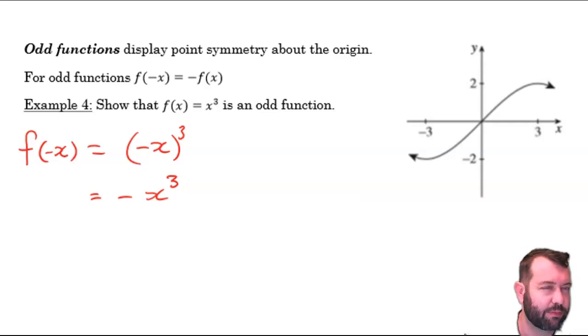Check that out. If I cube a negative, I get a negative. And we can see that that is the negative of my original function. That's the negative of function x. Therefore, x cubed is an odd function. How do we demonstrate that? By substituting negative x, simplifying, and we should find we have negative function x.